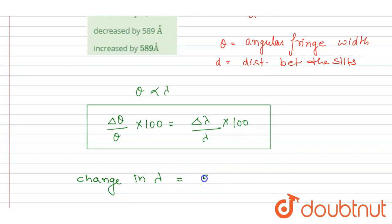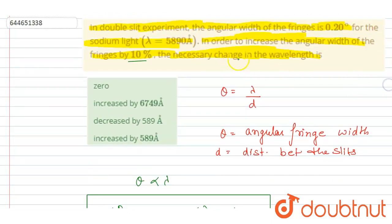It will be 10%. And this is the answer to this question. Now if you see the options here, we wanted to increase, right? So we have to increase the wavelength by also the same amount, 10%.